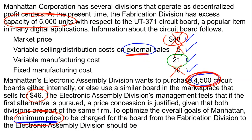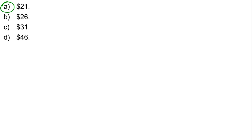The minimum price is $21 — the variable manufacturing cost. At a price of $21, the fabrication division has no additional contribution since the sales price equals the variable cost of production. There's no incentive to do this, but also no incentive not to do it. The correct answer is $21. Among the four choices, $21 is correct. The key is the excess capacity — because of it, we only need to cover variable costs. If the question asked for some incentive, the answer might be $22, but for minimum price, $21 is correct.